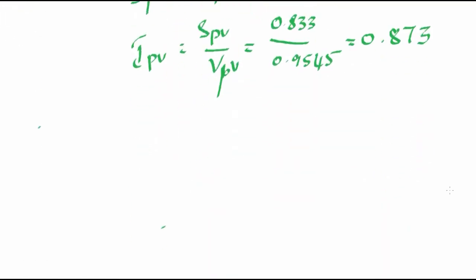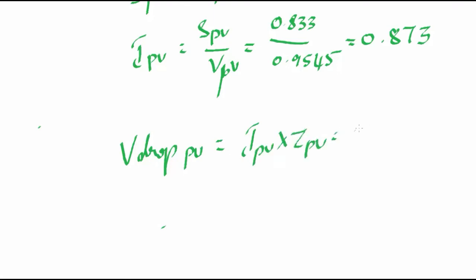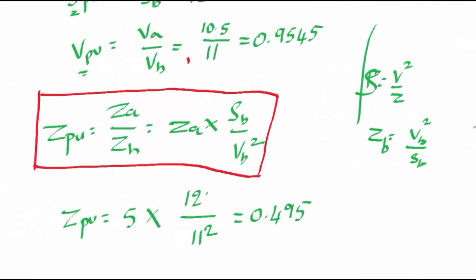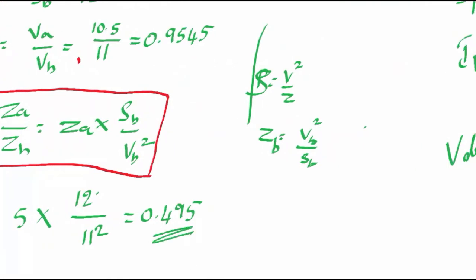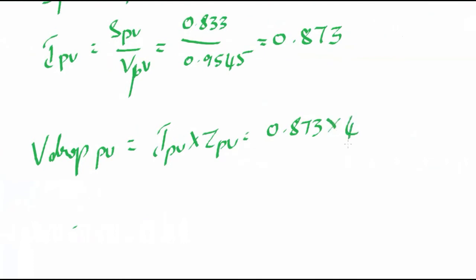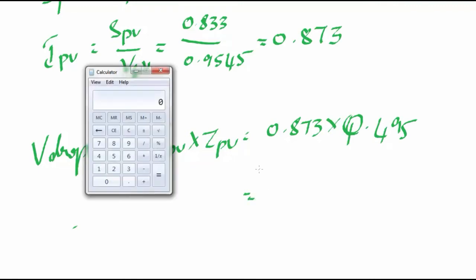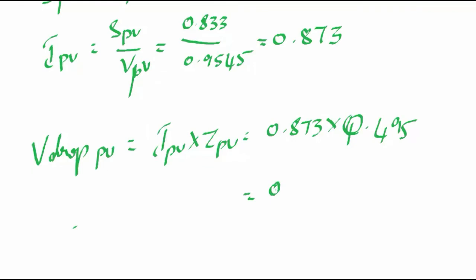Now the per unit voltage drop can be found: V_drop per unit = I per unit × Z per unit = 0.873 × 0.495 = 0.4321 per unit. This is one of the required values.